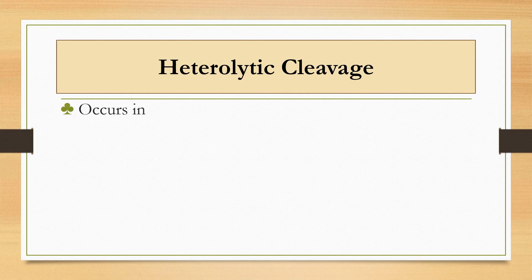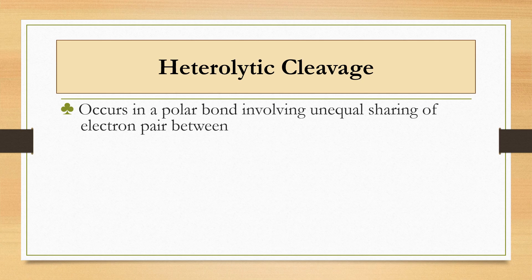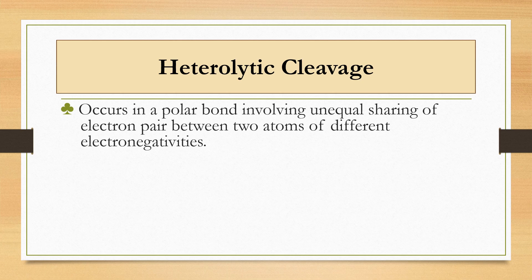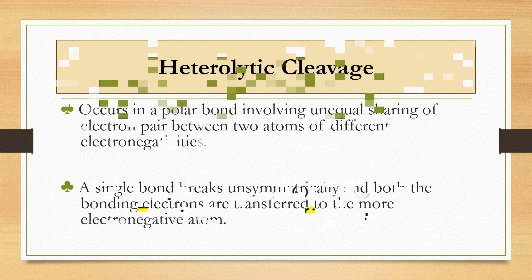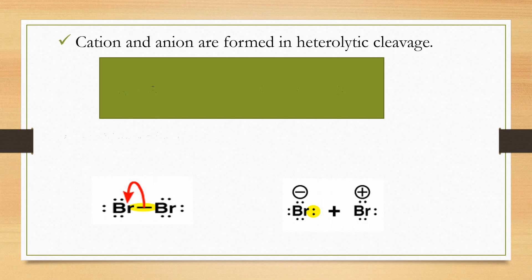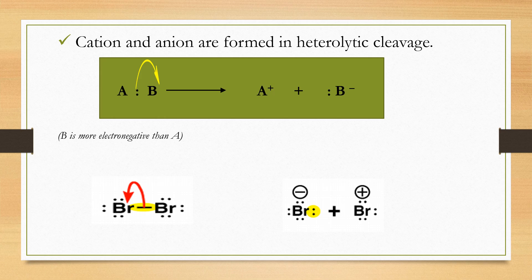For heterolytic cleavage, it occurs in a polar bond involving unequal sharing of an electron pair between two atoms of different electronegativity. A single bond breaks asymmetrically, and both bonding electrons are transferred to the more electronegative atom. Cation and anion are formed in heterolytic cleavage. In the example given, both bonding electrons are given to B, as B is more electronegative than A, forming A⁺ (cation) and B⁻ (anion).